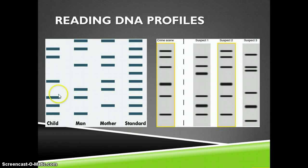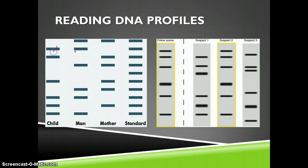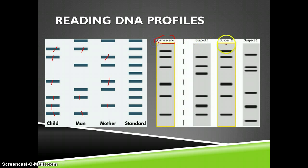In the paternity example shown, every band the child has is found in either the mother or the father, confirming parentage. In the crime scene example, comparing the crime scene DNA to multiple suspects shows that only suspect number two has the exact same pattern as the crime scene, allowing us to definitively say the DNA found at the crime scene came from suspect two.